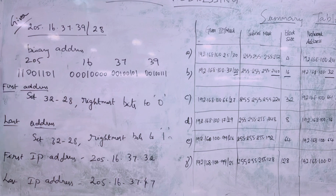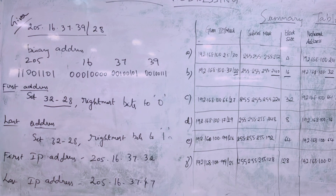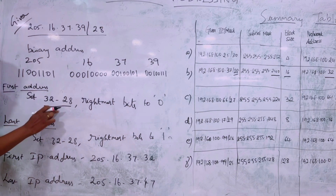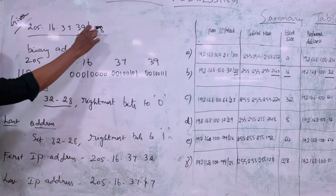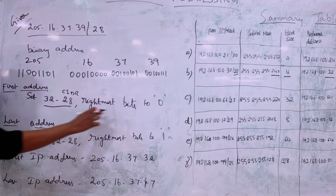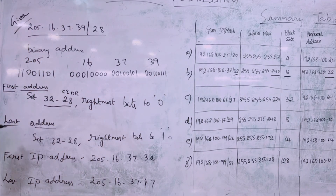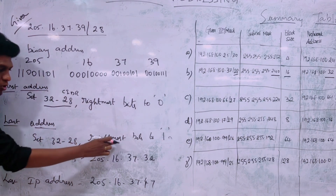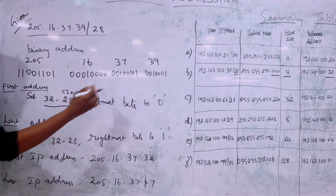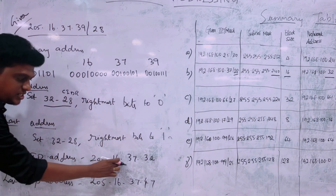After representing the IP in binary form, we find the first IP address by setting the rightmost (32 minus 28) = 4 bits to zero. For IPv4 the maximum is 32, and the 28 comes from the CIDR value. Setting the rightmost 4 bits to zero gives the first (network) address. The last address is found by setting those rightmost 4 bits all to one.